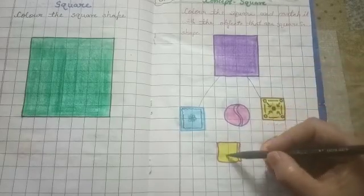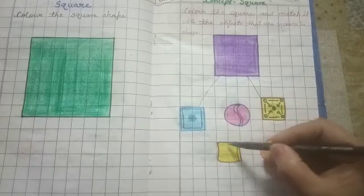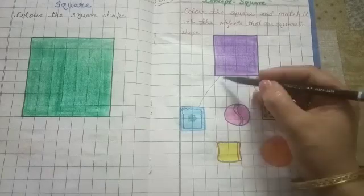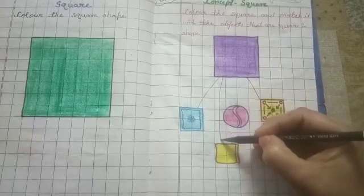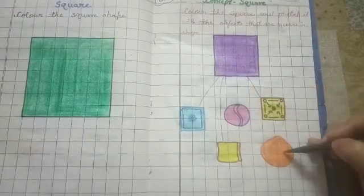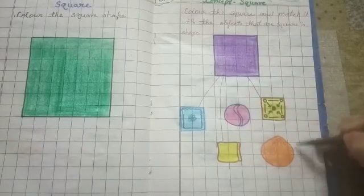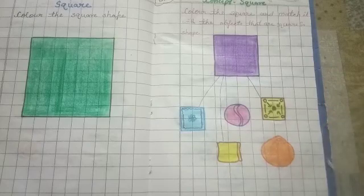And this one is bread. Bread slice kaise hootay hai? Square. To, aap isko square se matching karengi. Like this. And this one is orange. Orange is square shape mein hai? No. To, aap isko matching nahi karengi.